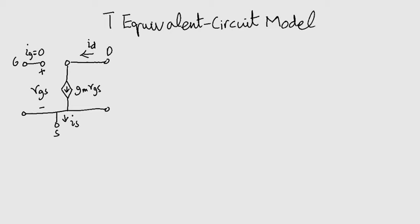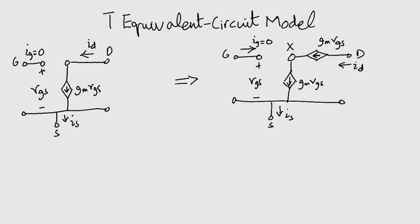Consider this hybrid PI model here. It shows the three currents ID, IG and IS. We can add a second current source between drain and a new terminal X. Obviously, this does not change our circuit, because K-Jaw's current law is not broken.